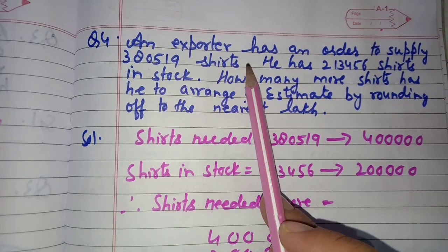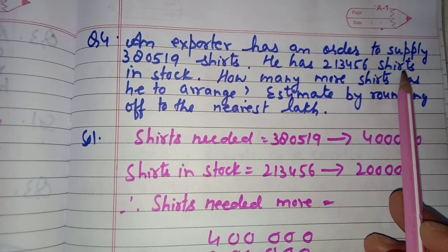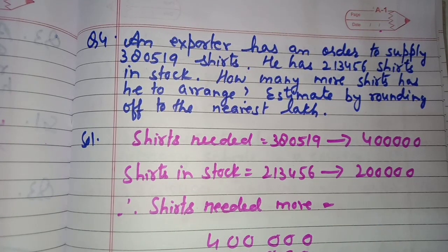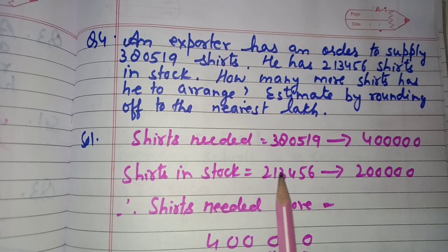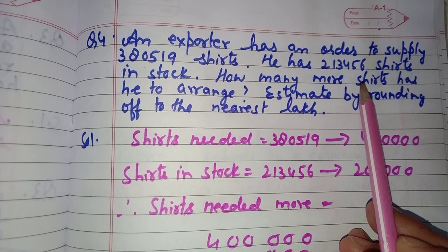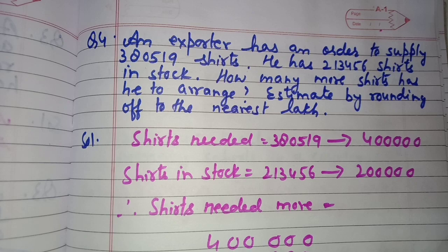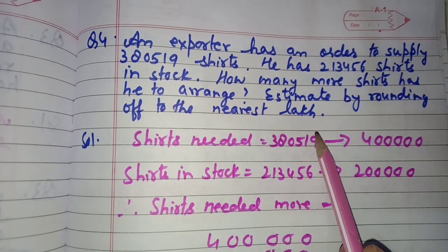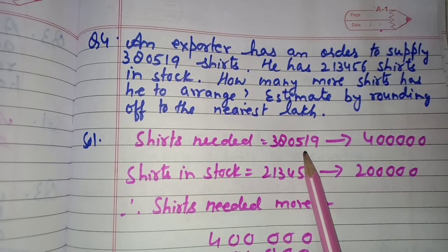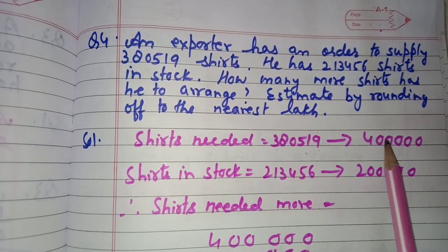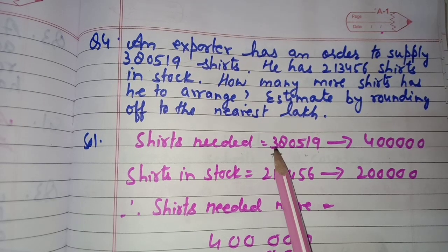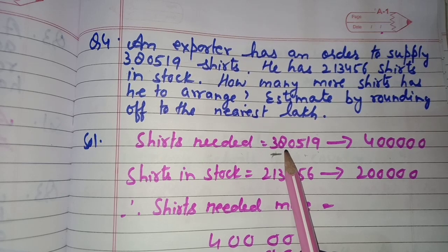The exporter needs to supply 3,80,519 shirts but has 2,13,456 shirts in stock, so he still needs to arrange more shirts. Shirts needed: 3,80,519 — rounding off the lakhs place, the digit to the right is 8, more than 5, so 3 becomes 4 and all following digits become zeros, giving 4 lakh.